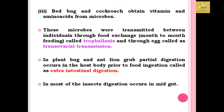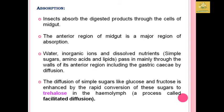In plant bugs and lace wings, extra-intestinal digestion occurs — partial digestion in the host body prior to food injection. In most insects, ingestion mainly occurs in the midgut. Regarding absorption, insects absorb digestive products through the cells of the midgut. The anterior region of the midgut is the major region of absorption, where water, inorganic ions, and dissolved solutes are absorbed by the walls of the anterior region, including the gastric caeca, by diffusion. The diffusion of simple sugars like glucose and fructose is enhanced by rapid conversion of these sugars into trehalose in the hemolymph — a process known as facilitated diffusion.